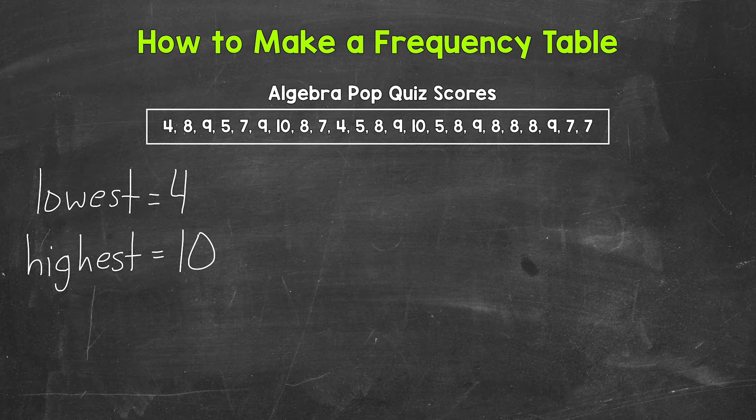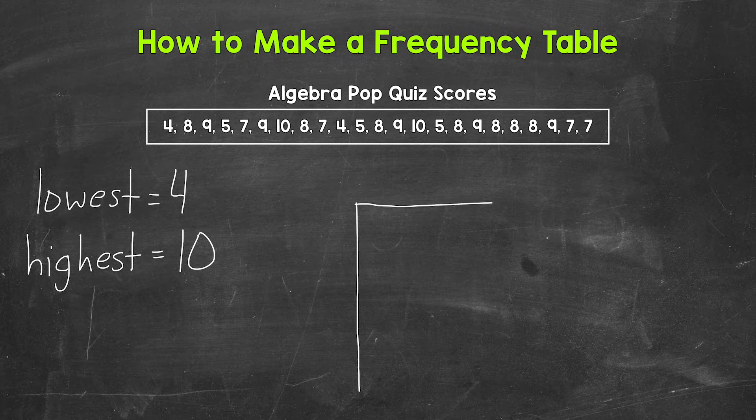Again, we are going from four to 10. And since we are writing out each individual value in our table, this is called ungrouped data or an ungrouped frequency table. So let's draw our table over here.